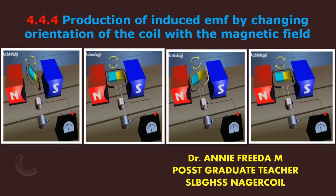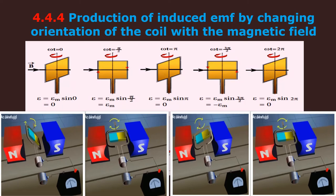In this video we are going to see the production of induced EMF by changing the orientation of the coil with the magnetic field. This is a five marks question which is often asked in 12th standard examination.